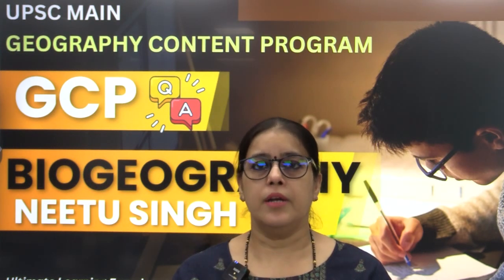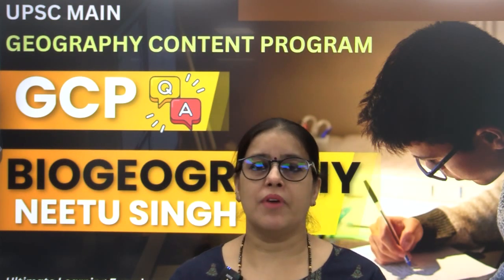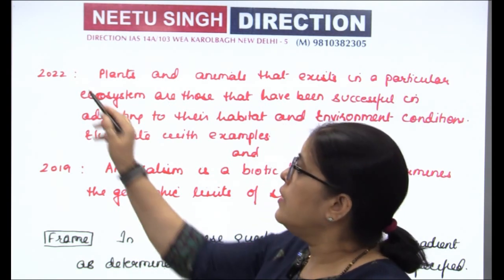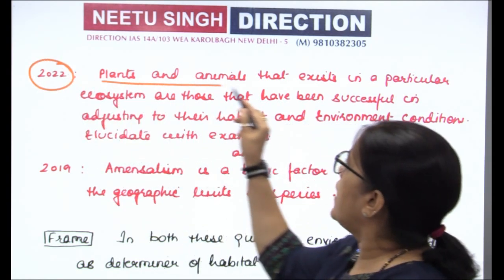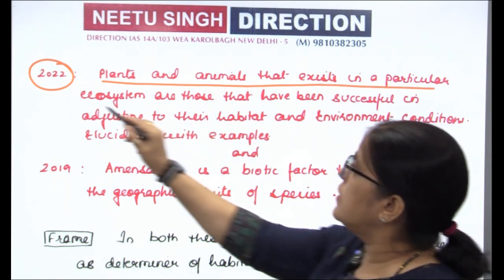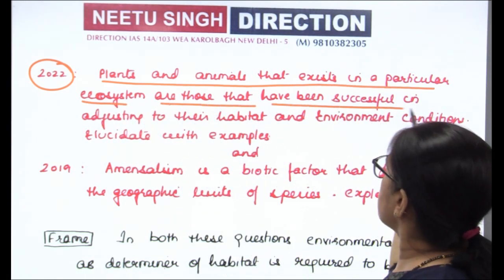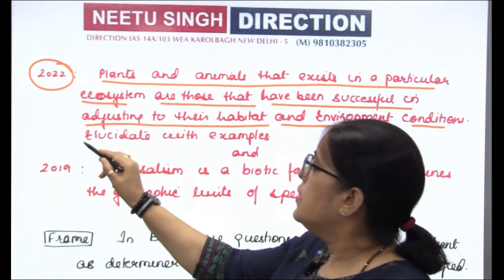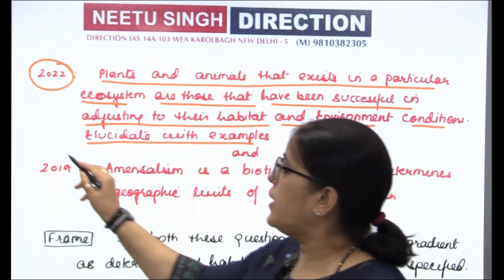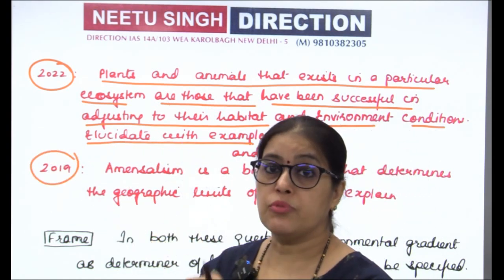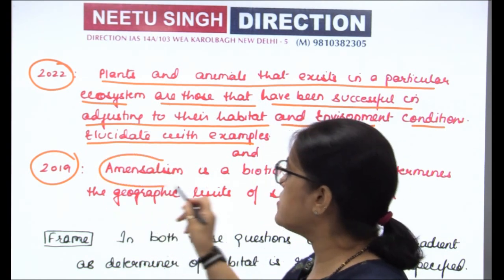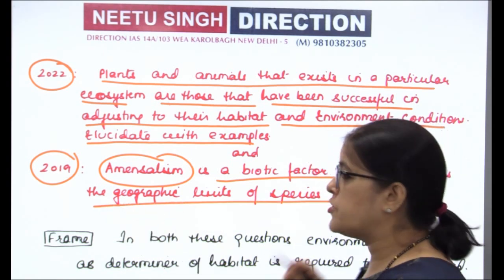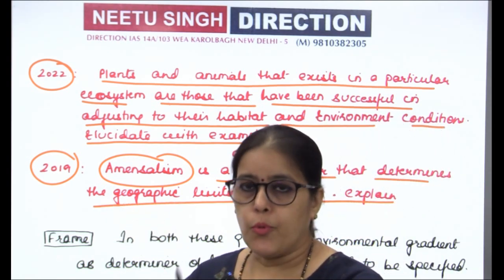Let us get on to our ready-made answers to the PYQs to understand how to work. As you can notice, I have selected two PYQs here. The 2022 question asks: 'Plants and animals that exist in a particular ecosystem are those that have been successful in adjusting to their habitat and environmental conditions — elucidate with examples.' The 2019 question is more specific: 'Amensalism is the biotic factor that determines the geographical limit of the species — explain.'